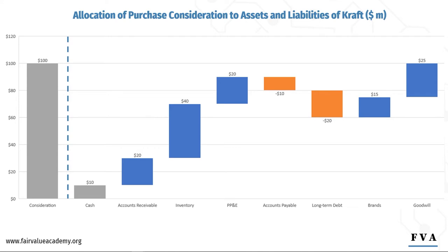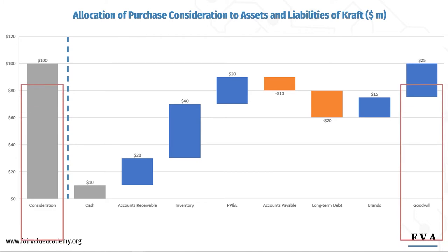Goodwill was the residual — what was left over after deducting assets and liabilities from the consideration paid. Note, there is a link between Goodwill and consideration paid: the higher the consideration paid, the higher the Goodwill.